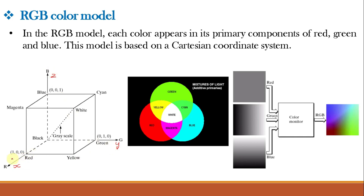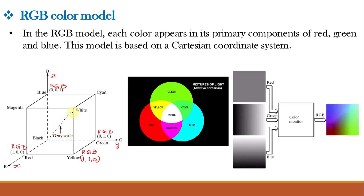At the red corner, red is one while green and blue are zero. At the green corner, G is one while R and B are zero. At the blue corner, R and G are zero and B is one. Other values are obtained accordingly — for example, yellow is made up of red and green, so yellow is given by (1, 1, 0). In this model, black is at the origin and white is at the opposite corner, and grayscale values — points of equal RGB values — extend along the line joining these two points.